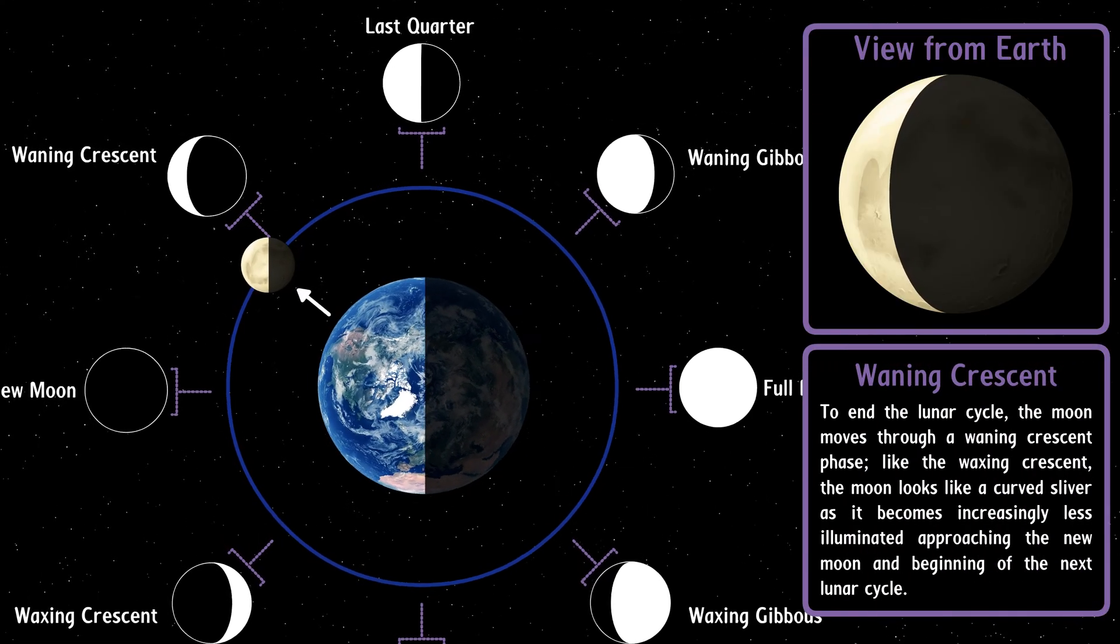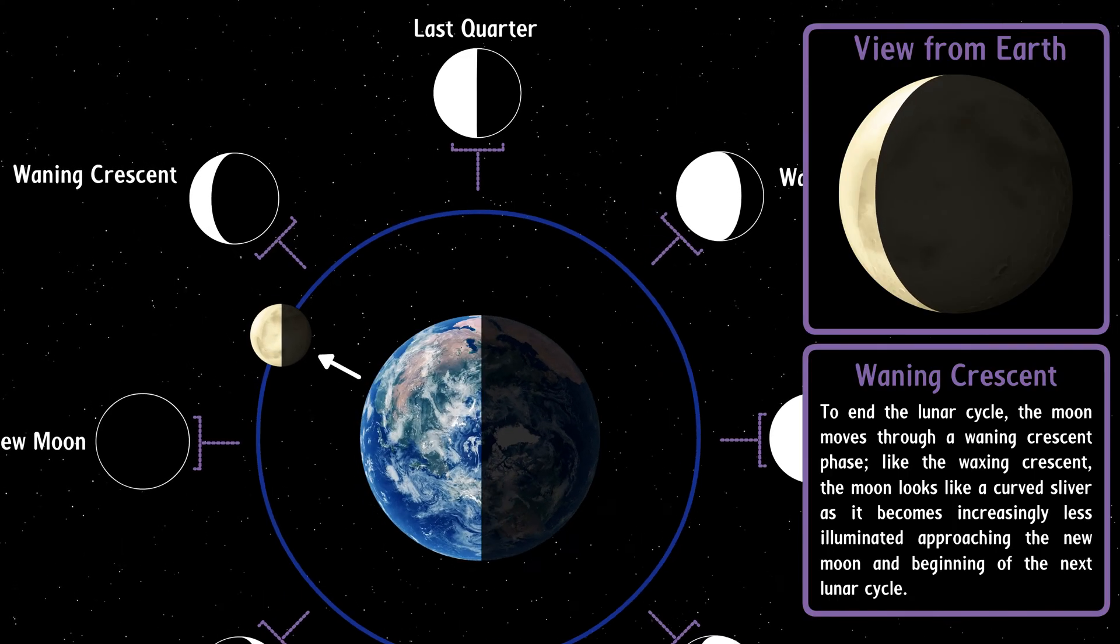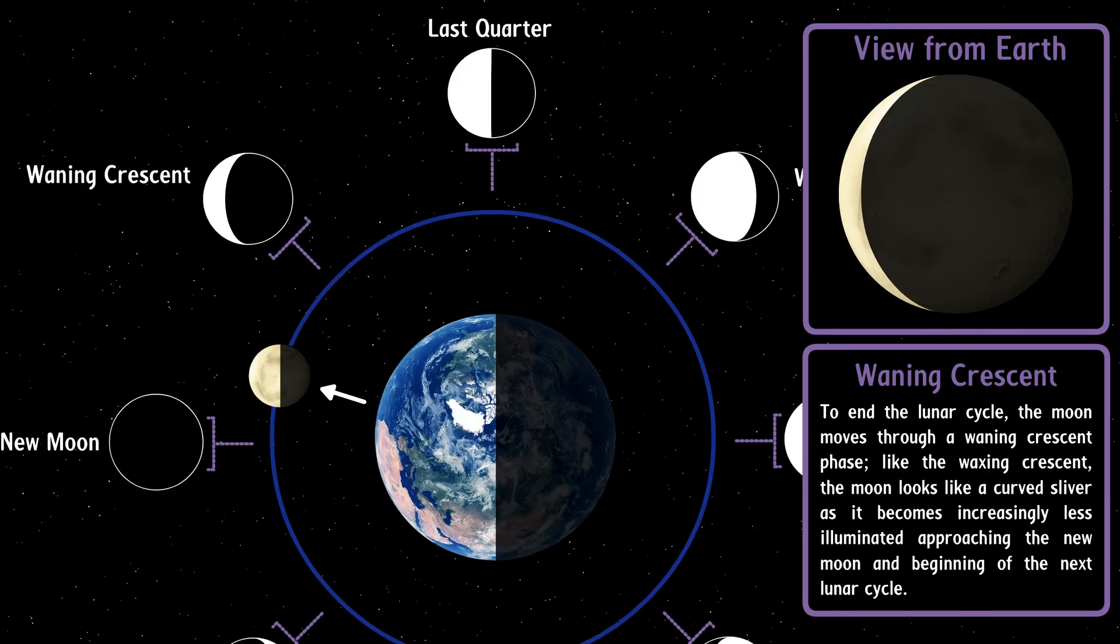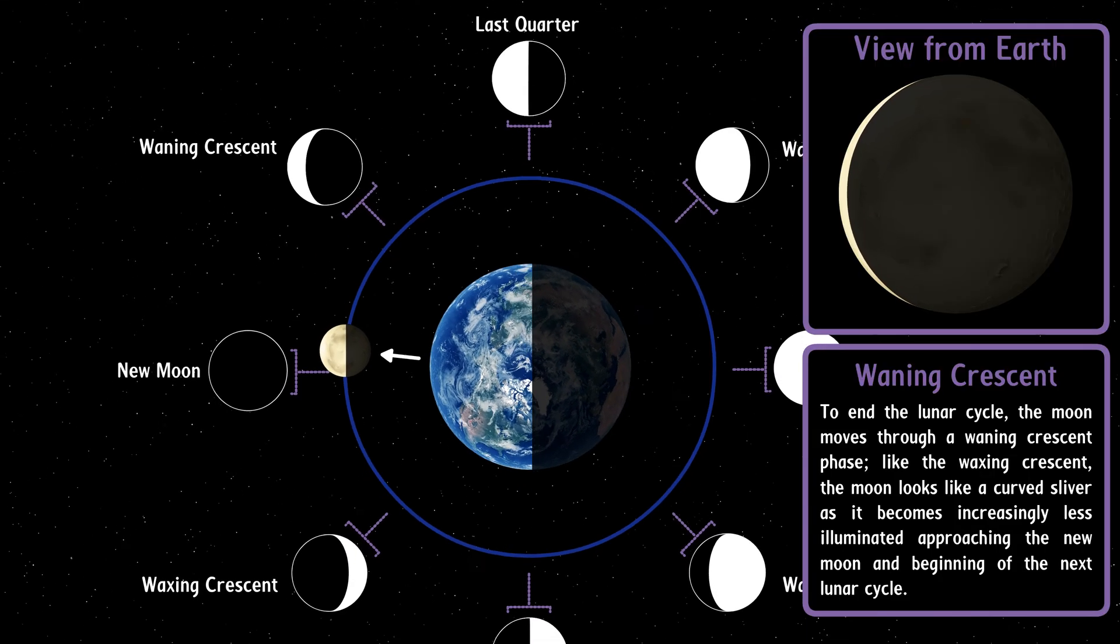Waning crescent. To end the lunar cycle, the moon moves through a waning crescent phase. Like the waxing crescent, the moon looks like a curved sliver as it becomes increasingly less illuminated, approaching the new moon and beginning of the next lunar cycle.